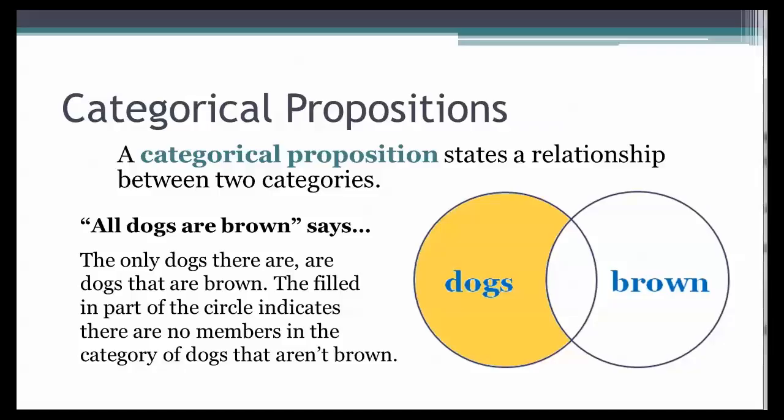The main point here is that the proposition states a relationship between two categories of things, in this case, dogs and brown things.